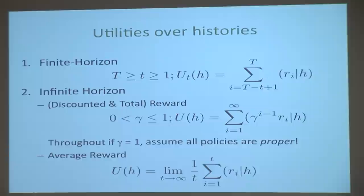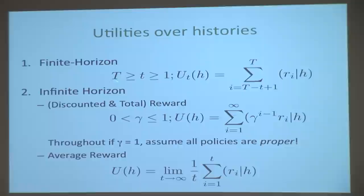So what's the agent's goal? Let's get formal about the agent's objective. There are many different types of objectives used in reinforcement learning. Let me define formally three different types by defining what are called utility functions. There are three types of utility. There's some history H that's happened between the agent and the environment — the histories consist of observations, actions, and rewards. How good is that history? The agent is trying to achieve good histories.